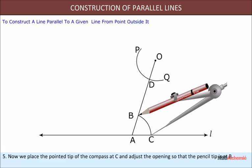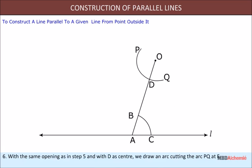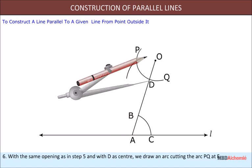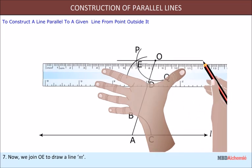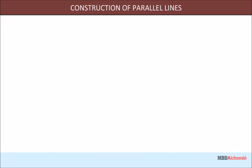Step 6: With the same opening as in step 5 and with D as the center, we draw an arc cutting the arc PQ at E. Step 7: Now we join OE to draw a line m.